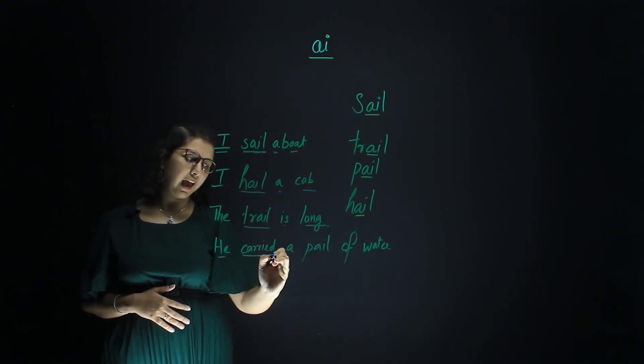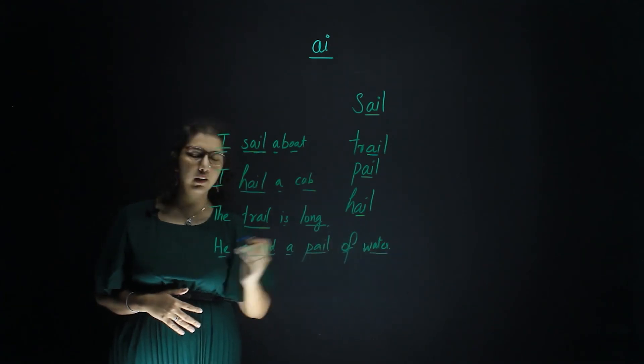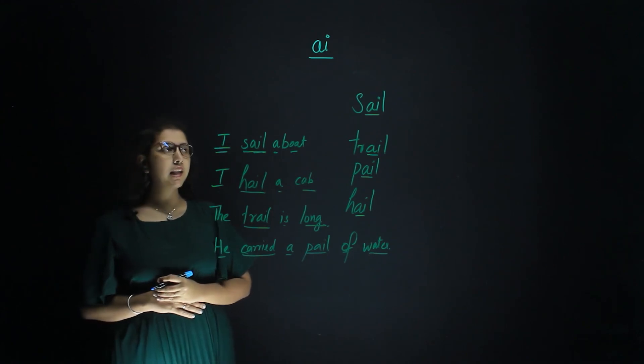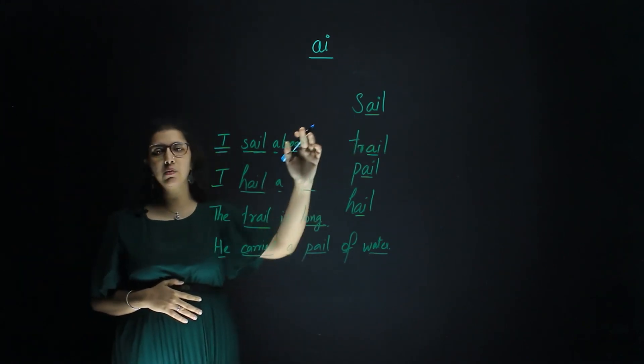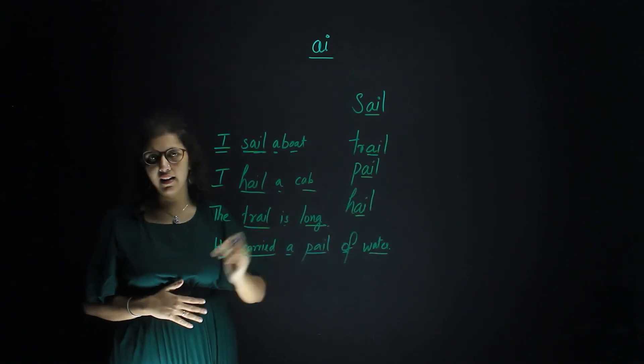He carried a pail of water. So, what are the words that we learned today that belong to the AI sound? SAIL, TRAIL, PAIL, and HAIL.